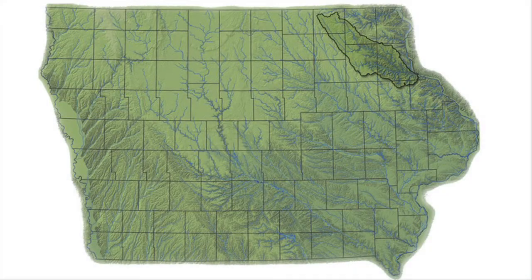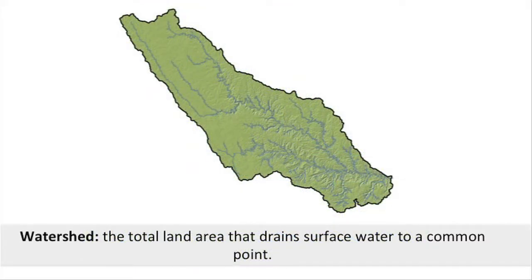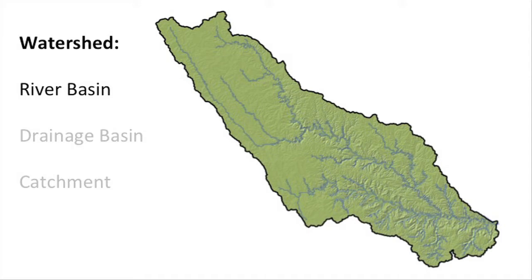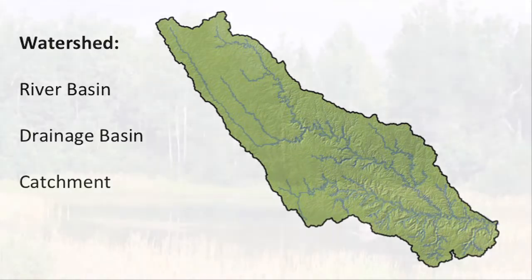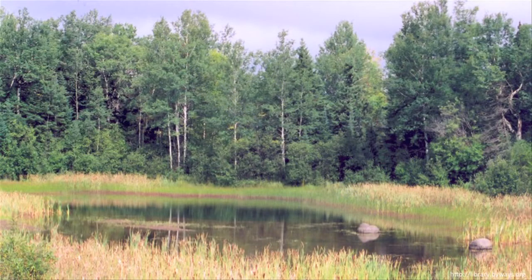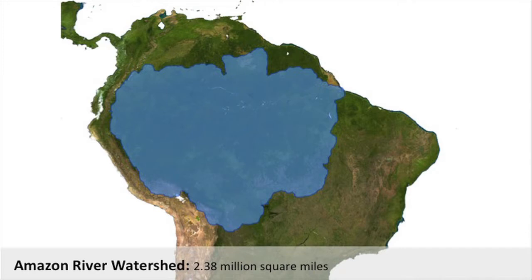The total land area that drains surface water to a common point or common body of water is called a watershed. Synonyms for watershed include river basin, drainage basin, and catchment. Watersheds can be as small as a parcel of ground that drains into a pond, or as large as the 2.38 million square miles in South America that drain into the Amazon River and its tributaries.